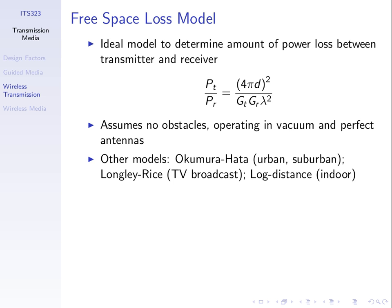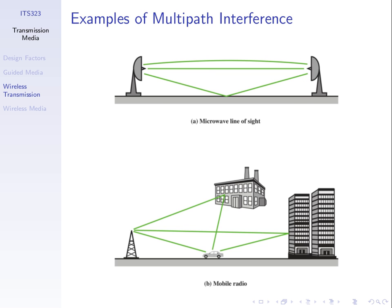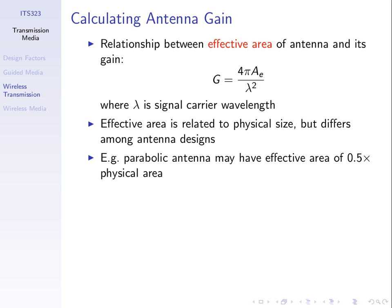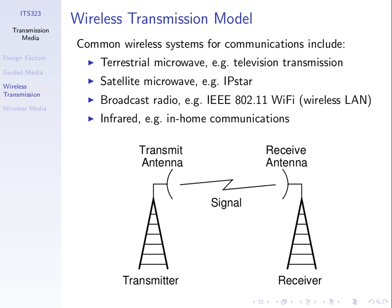Before coming back to the example, we need to explain antenna gain again. In free space, the received power depends upon the path loss L, the transmit power, and the gains of the antennas. Let's explain what is the gain of an antenna.